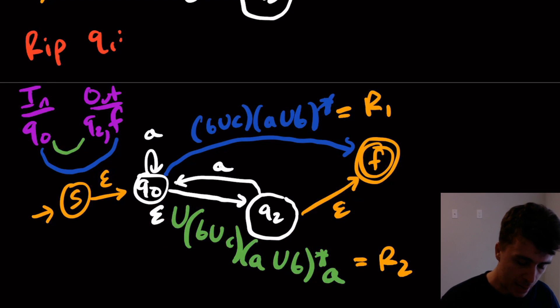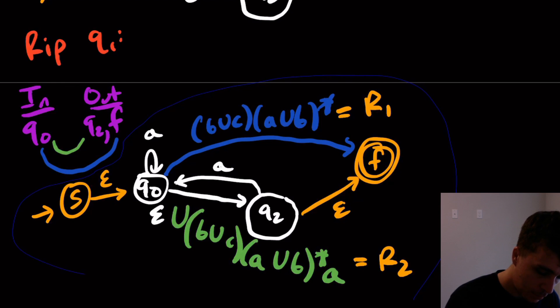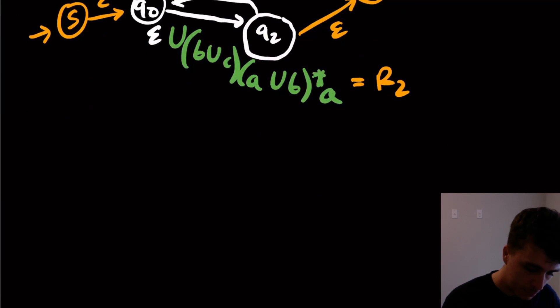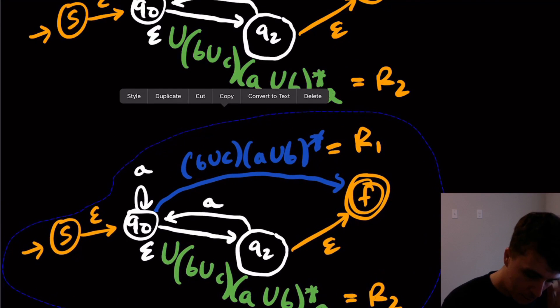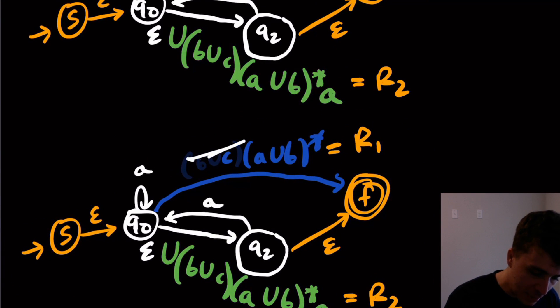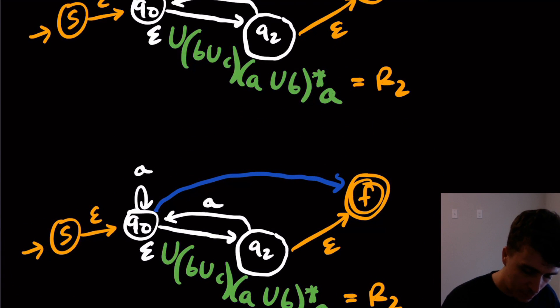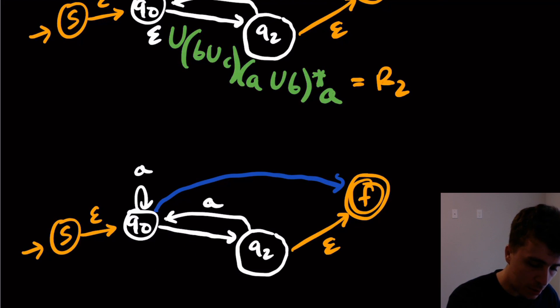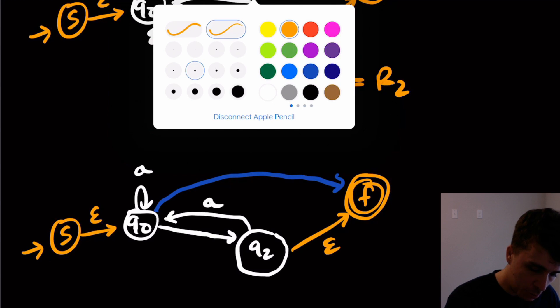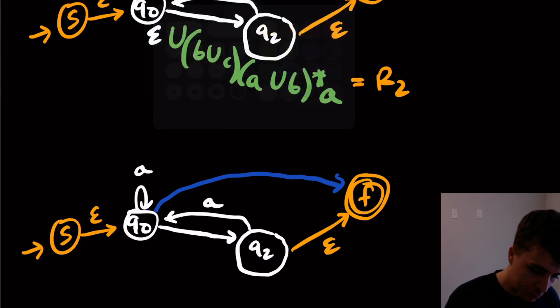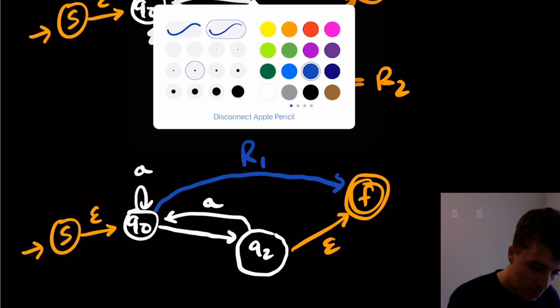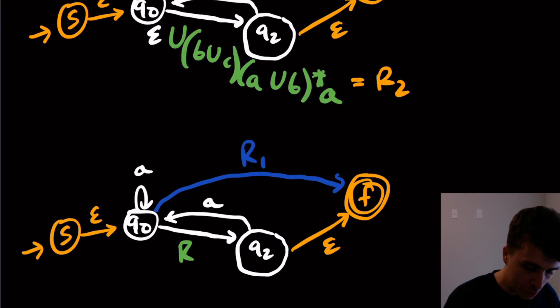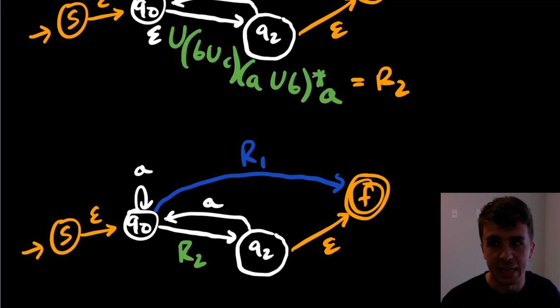Okay, so then, now we can actually simplify this whole machine, which I'm going to do right here. So I'm going to copy this and paste it right here. So now I'm just going to actually delete this transition and this one and just replace it with R1 and R2, just to make our lives a little easier. So, this one was in blue, that was R1, and this one was in green, this is R2. Okay, this is just to make it easier.